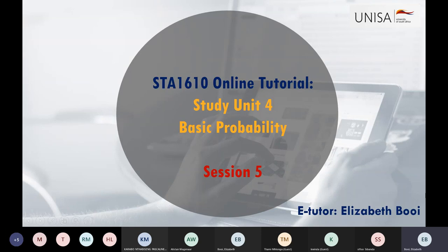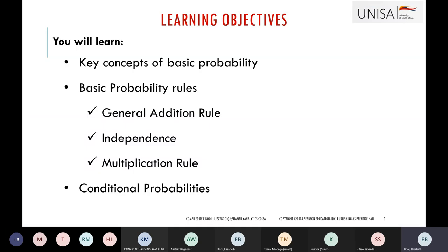Let's start with this week's session — welcome to session number five. Today we're going to be doing basic probability. By the end of the session, you should know the key concepts in basic probability, the basic probability rules including the general addition rule, independence, multiplication rule, mutually exclusive events, and conditional probabilities.